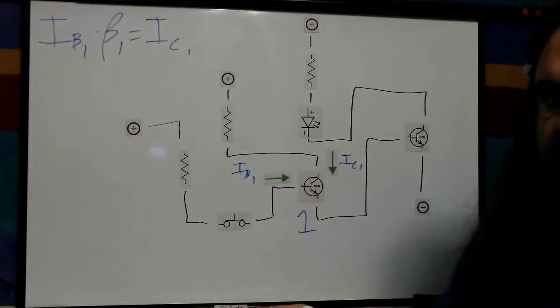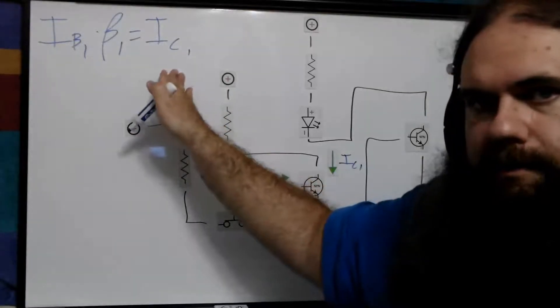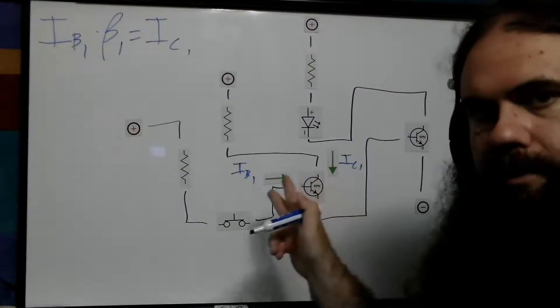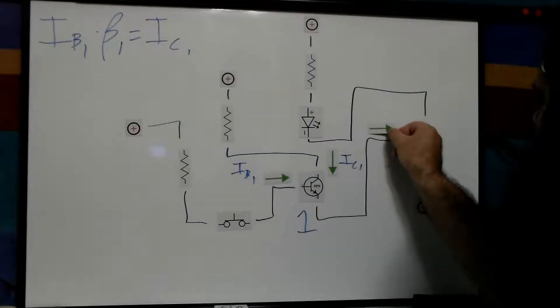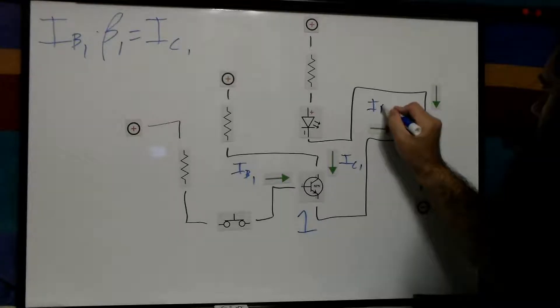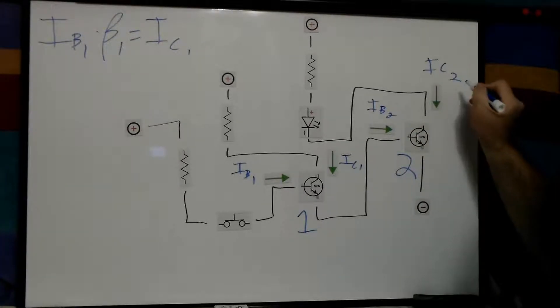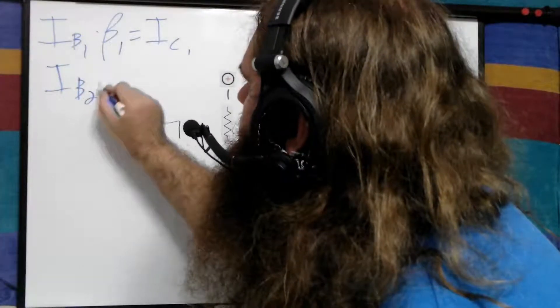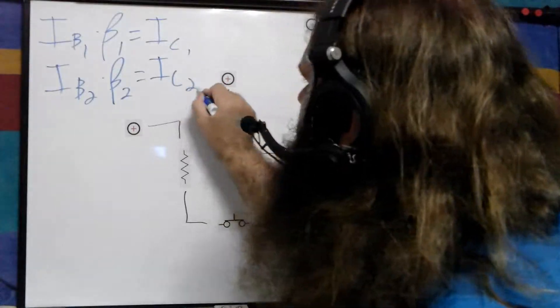But it's just a number, or a graph, but we can approximate it with one number that determines how much the collector current can be, the magnification. But we have another transistor, which has its own base and collector current through base 2, because this will be transistor 2. Current through collector 2.